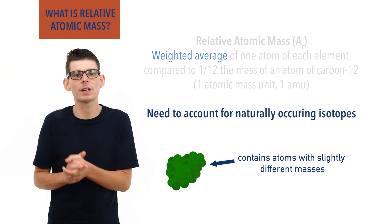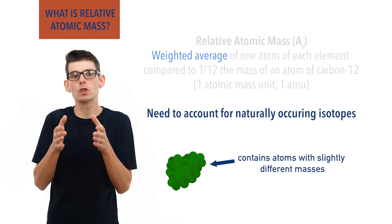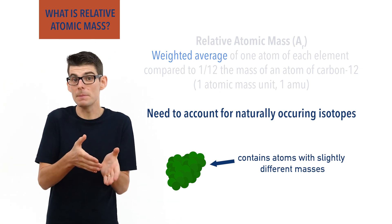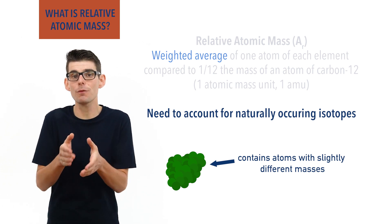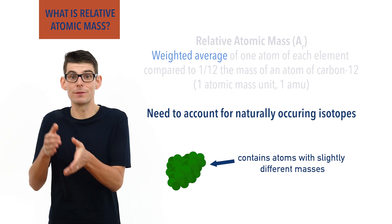The percentage of naturally occurring isotopes of an element should always be the same, meaning regardless of how much sample you have, the weighted average of all isotopes should be the same.